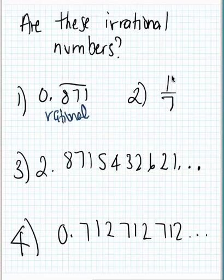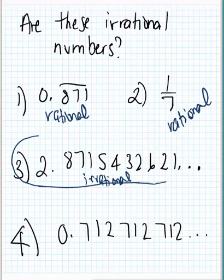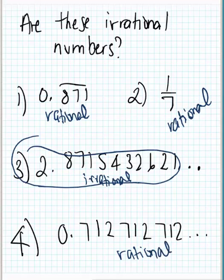Our next example, we've got the fraction 1 over 7 or 1 seventh. So straight away, we know this is rational. It's already a fraction. That's pretty straightforward. Number 3. Let's have a look at our decimal. We've got 2.8715432621. And it's telling us it's going on forever. Can we see a pattern at this stage? No, we can't. So we assume this is irrational. Because there is no pattern. And the decimal goes on forever. So that one is irrational. Number 4. Once again, our decimal is infinite. It goes on forever. But is there a pattern? Let's have a look. 0.712712. Yes, there is a pattern. So this is also rational. It can be turned into a fraction because there's a pattern in its decimal. So out of all these examples, there was one irrational number.